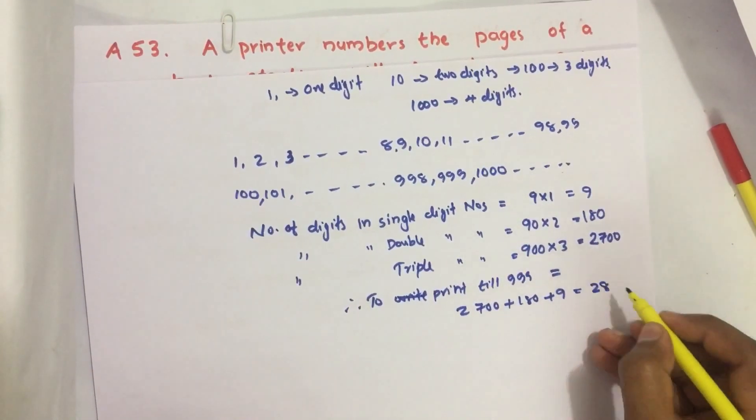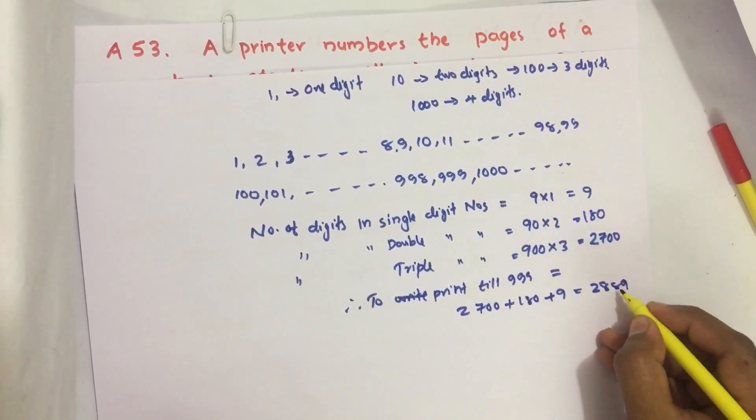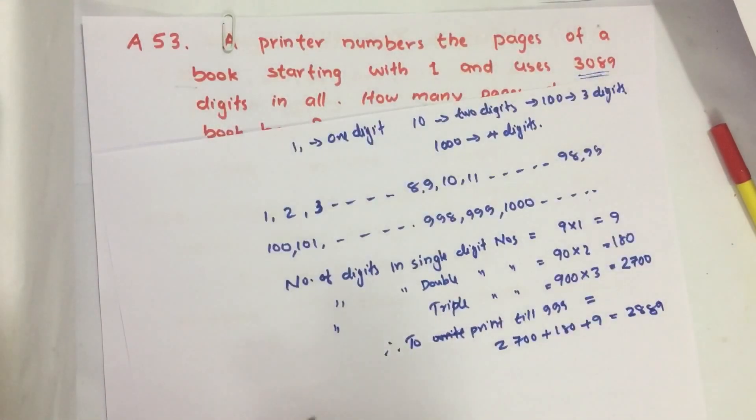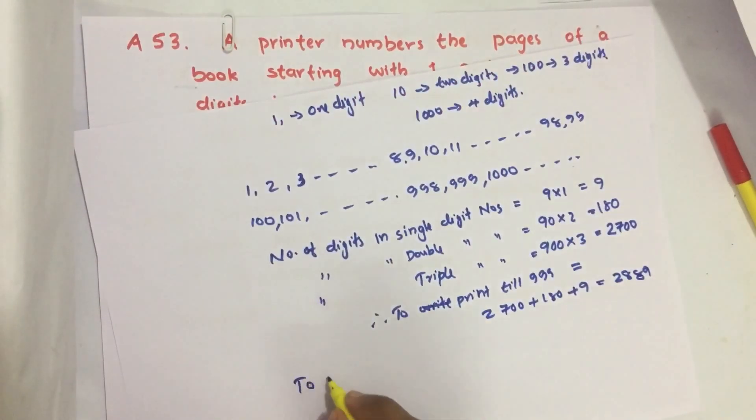2700 plus 180 plus 9, which equals 2889.